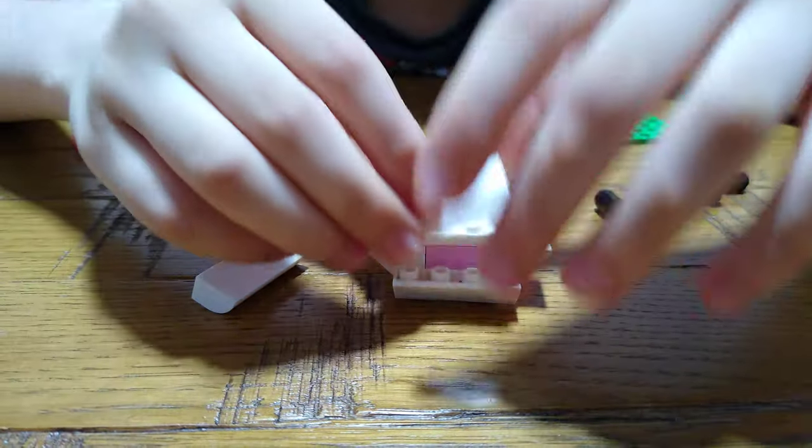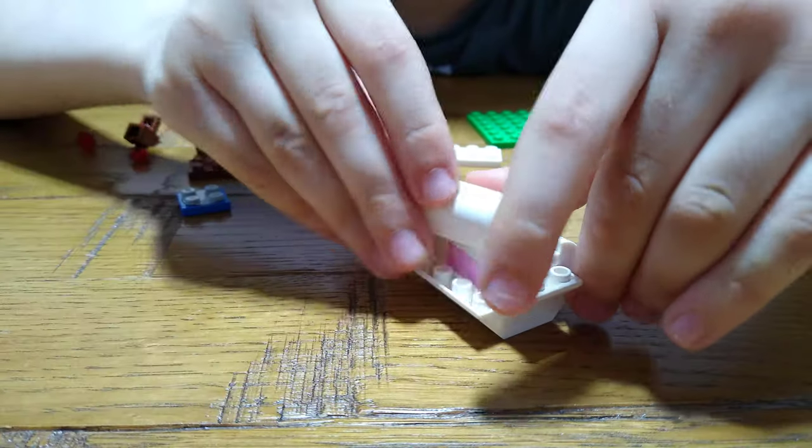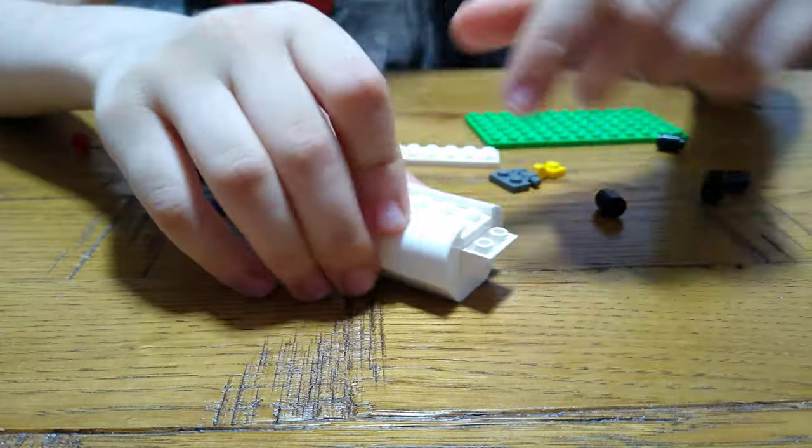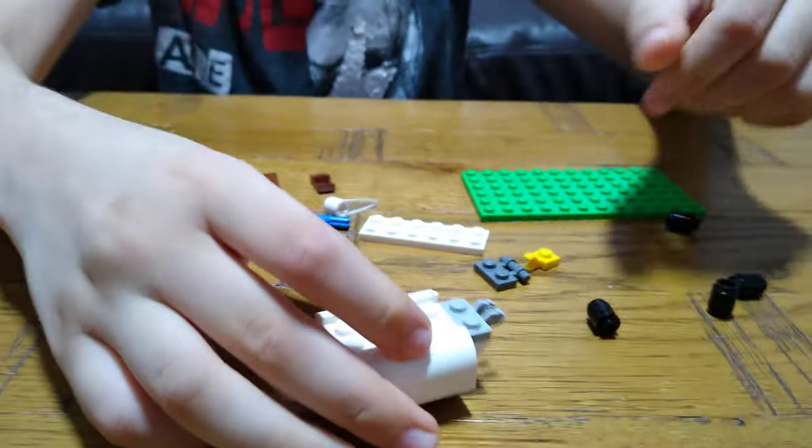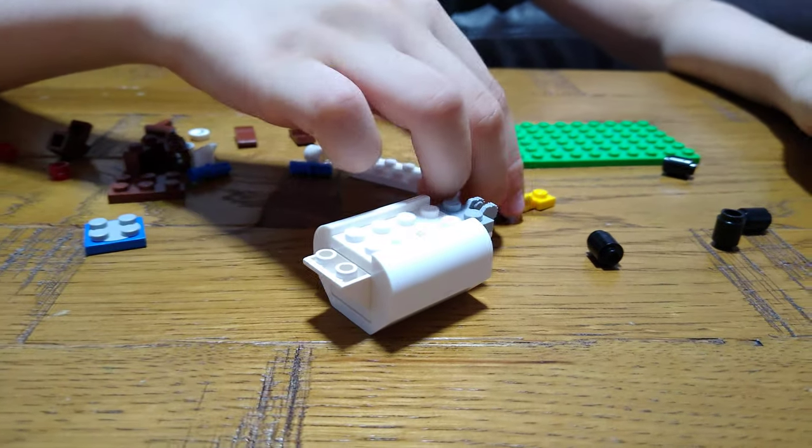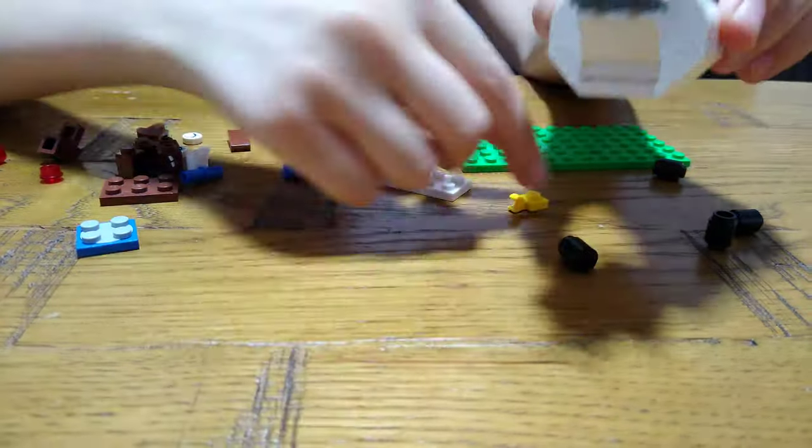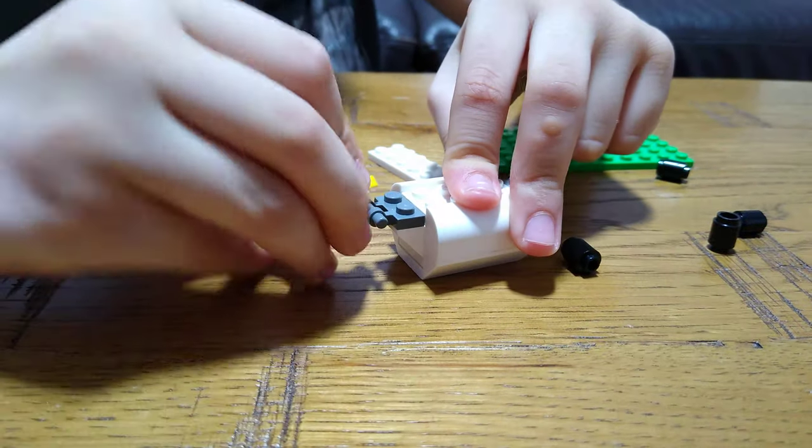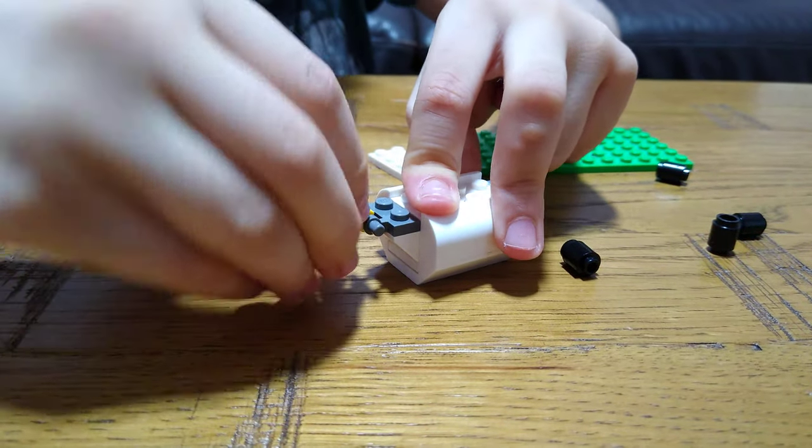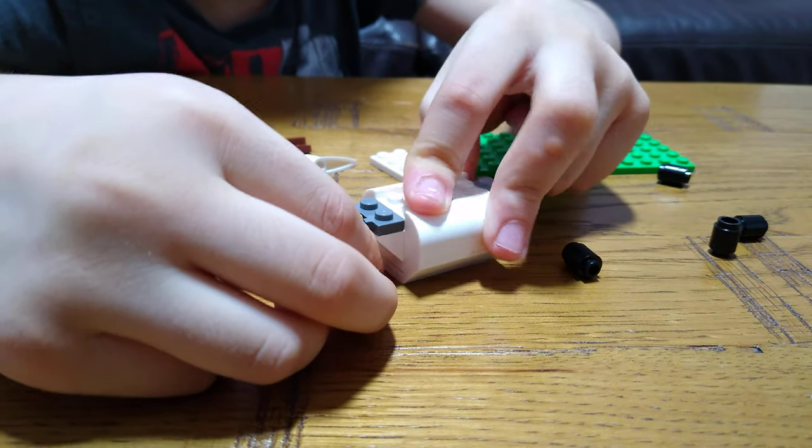Then you get this one and then turn this around. Put this one to here and then you get this connector. But we're not going to really connect anything. Basically the tail of the sheep. Then we need this other connector and then this yellow connector for like the bell of the sheep.